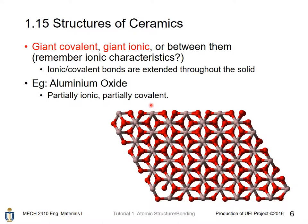Ceramics have a giant covalent or giant ionic structure, or something in between. Ionic and covalent bonds extend throughout the solids. For example, aluminium oxide has bonding that is partially ionic and partially covalent, extended throughout the solid, connecting every single atom or ion within the material.